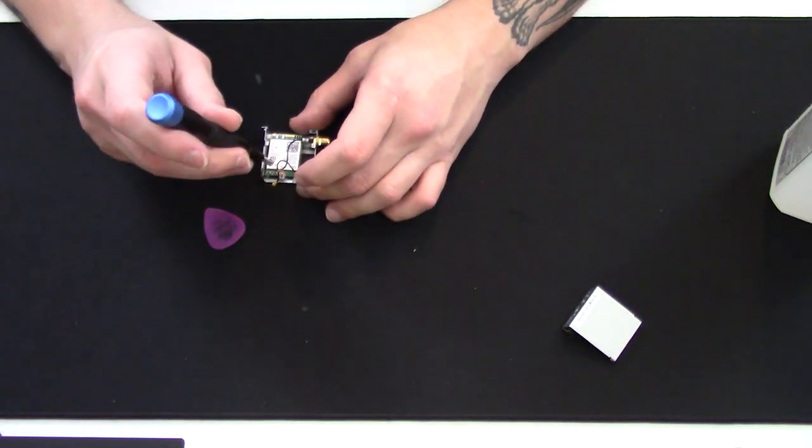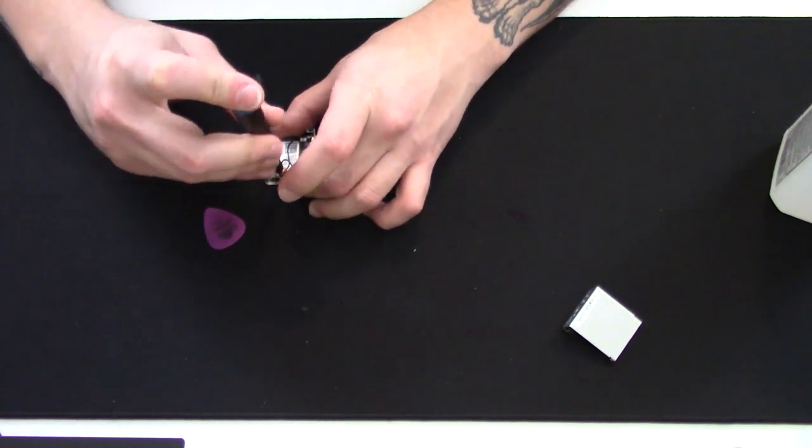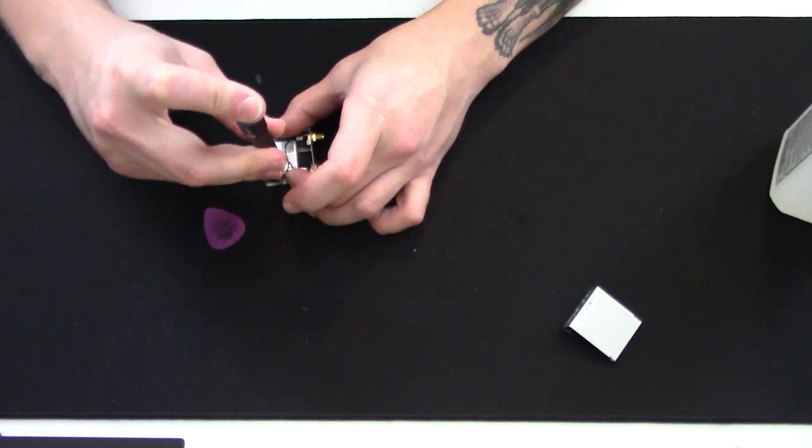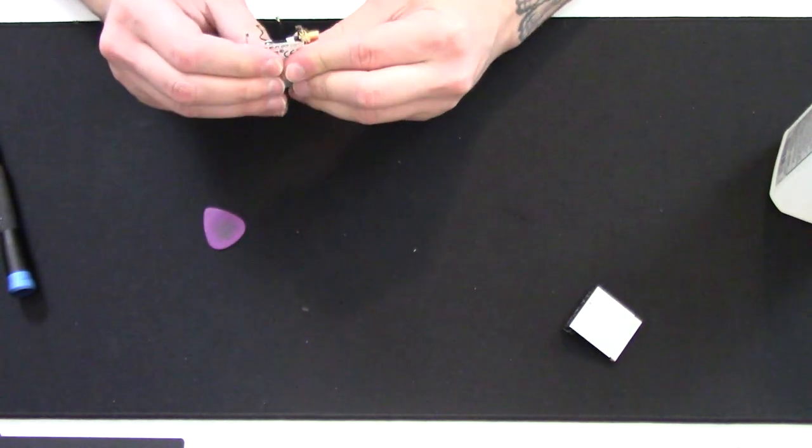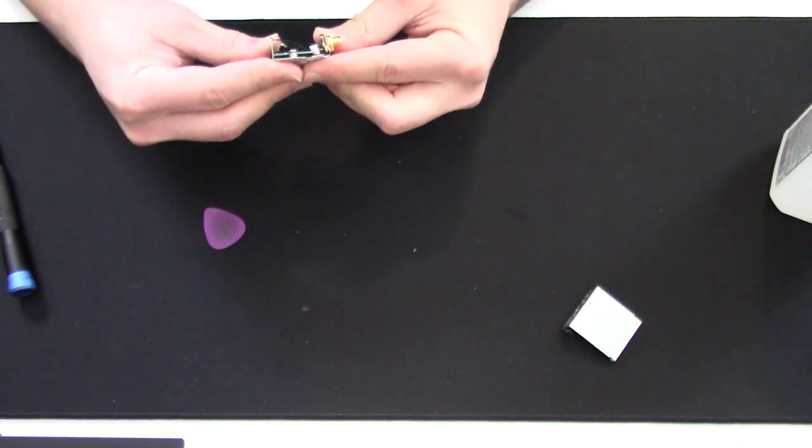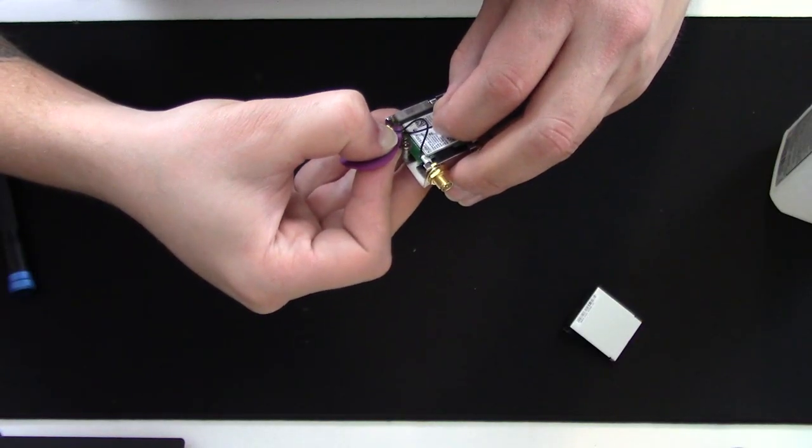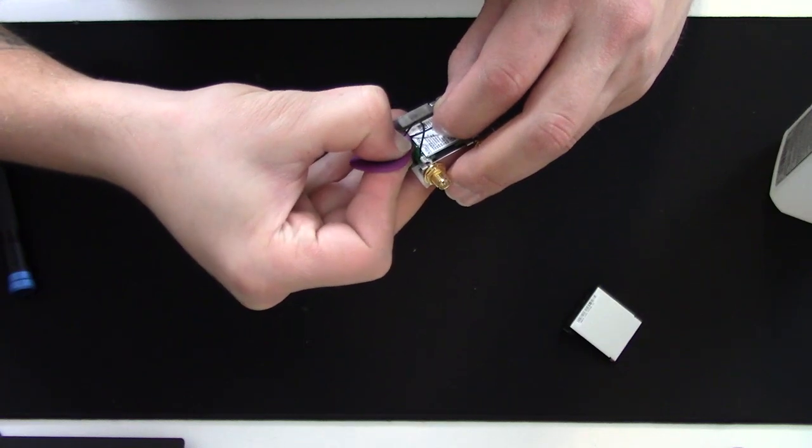Screw the PCB back into the housing, then begin bending the housing back into place. Attach the two antennas to the PCB.